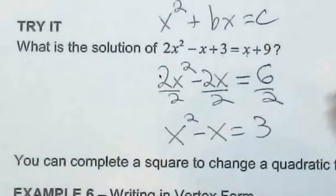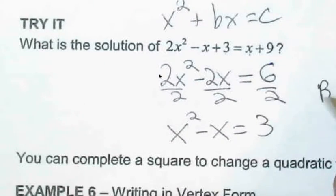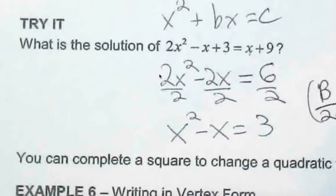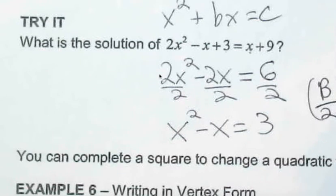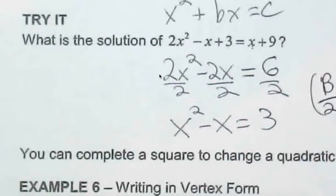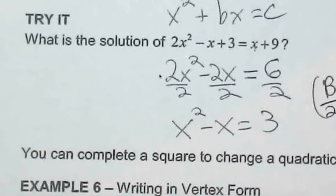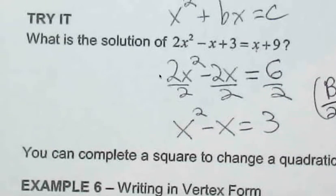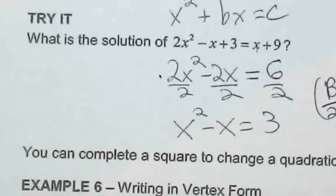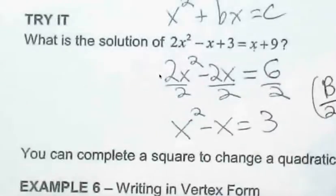And if we go from here, our constant b over 2 being squared is going to be negative 1 over 2. So if we square this, negative 1 half being squared, this is going to be 1 fourth.